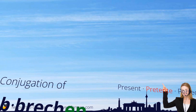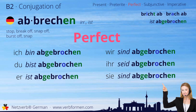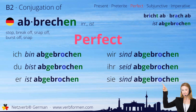Let's continue with the present perfect: ich bin abgebrochen, du bist abgebrochen, er ist abgebrochen, wir sind abgebrochen, ihr seid abgebrochen, sie sind abgebrochen.